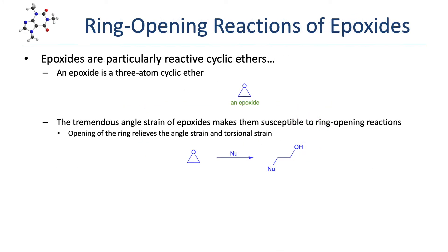The last nucleophilic substitution reactions we're going to explore are the reactions of epoxides. An epoxide is actually just a special ether — it's a three-atom cyclic ether. And we know that three-atom rings are actually really unstable. They have a tremendous amount of angle strain, and in this case, a considerable amount of torsional strain from the eclipsing C-H bonds. The combination of angle strain and torsional strain found in epoxides makes them very susceptible to ring-opening reactions.